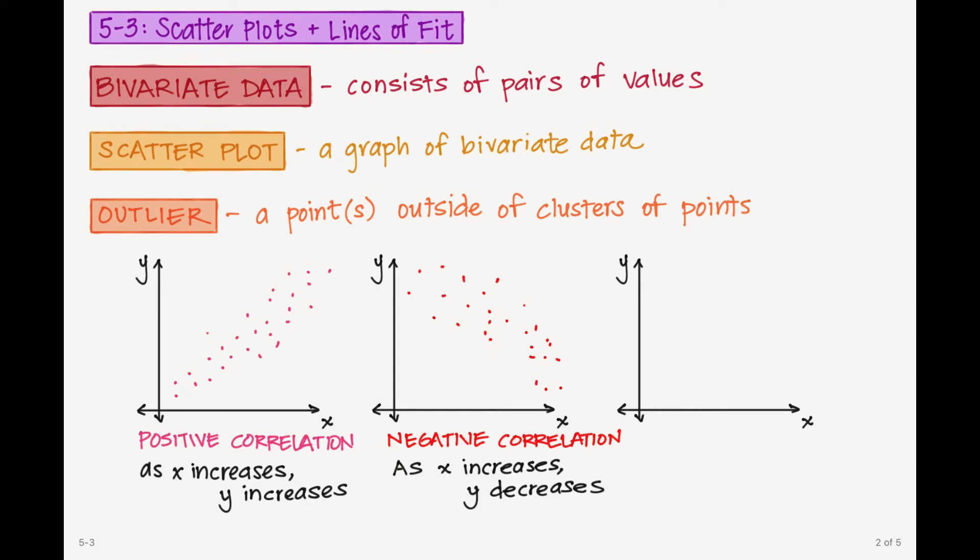And then it's also possible that the data that you collect really is just kind of random. There's no correlation between any of those points. Now an outlier would be a point, again, that is outside of the cluster points. So for instance, this point right here would be considered an outlier from my data.